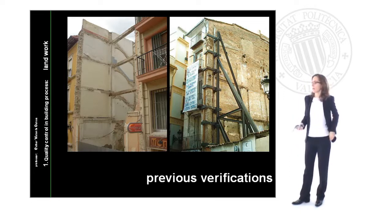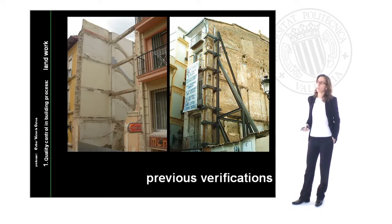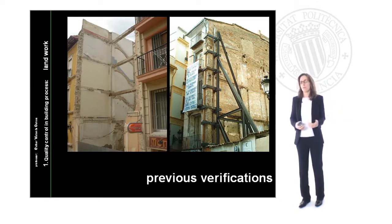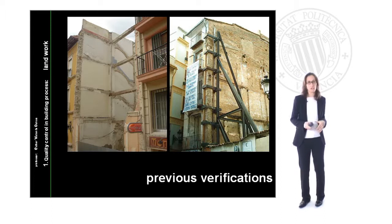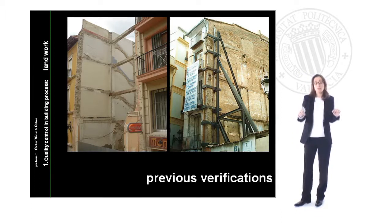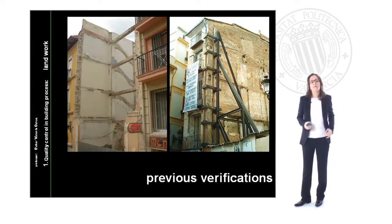In this picture we can see how reinforcement is supporting the facade, and in this one we can see how the demolition conserved the original beams from the previous building before complete demolition. These will remain until the end of the construction to support the pressure from the neighboring buildings.